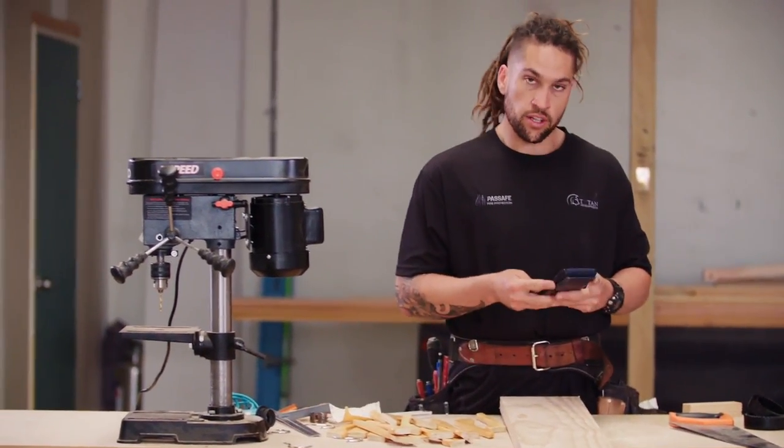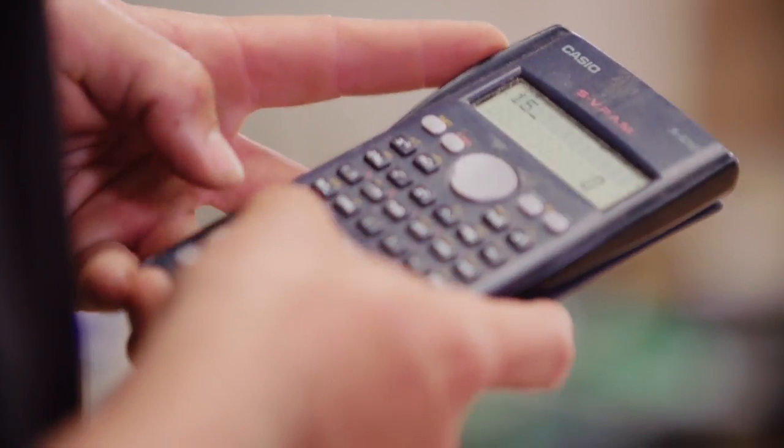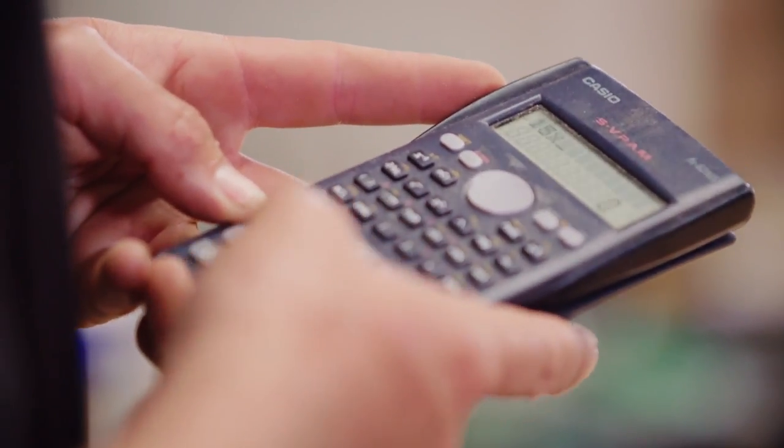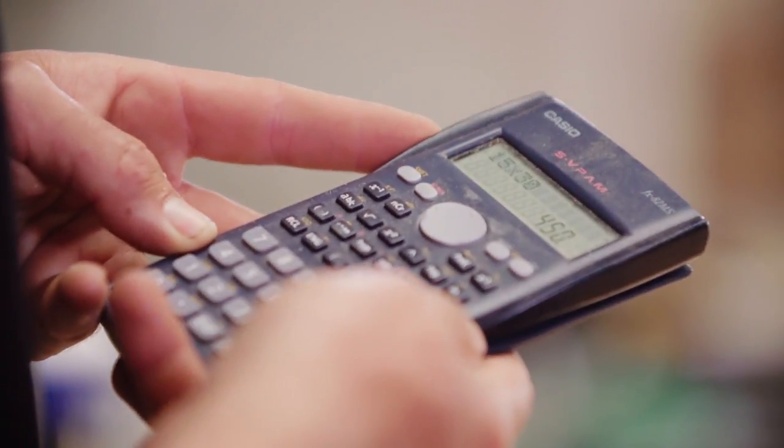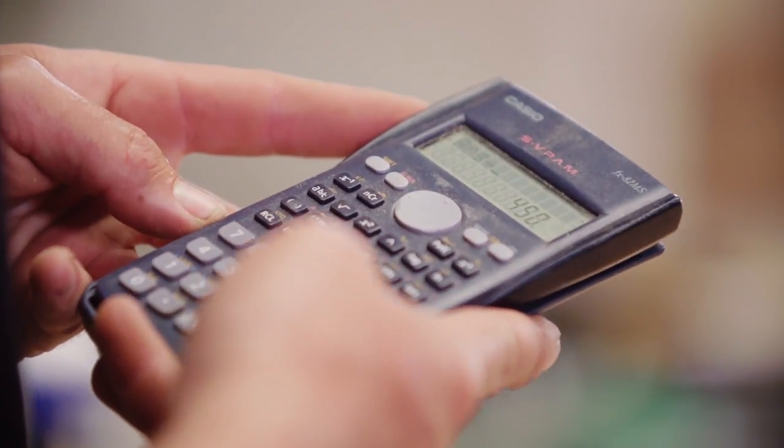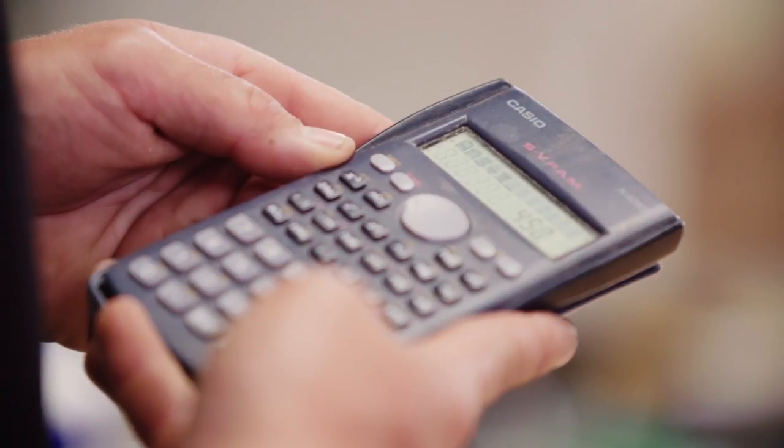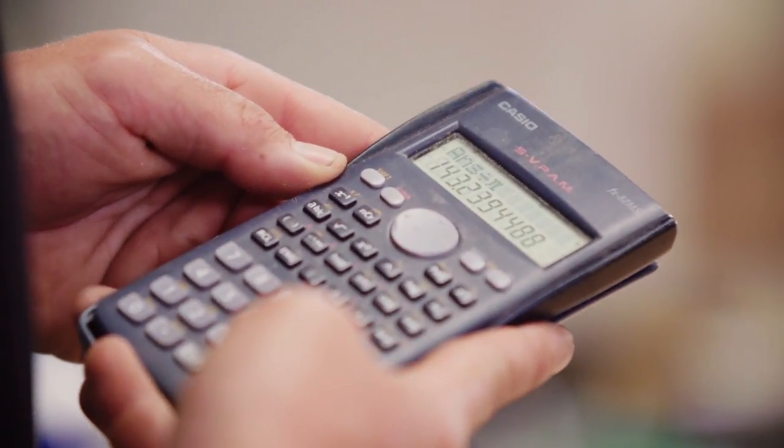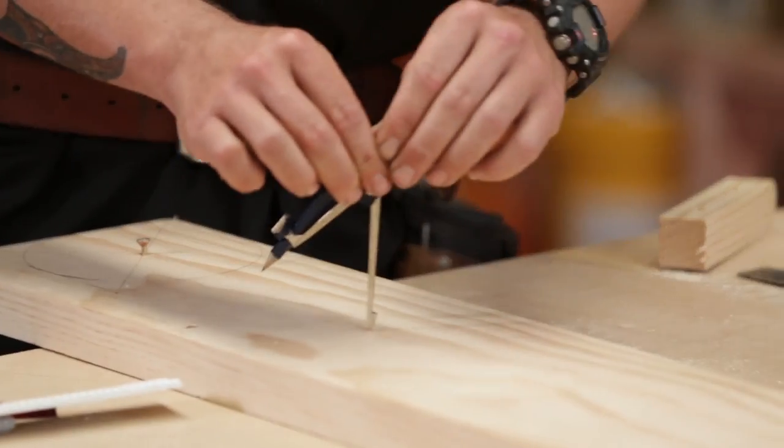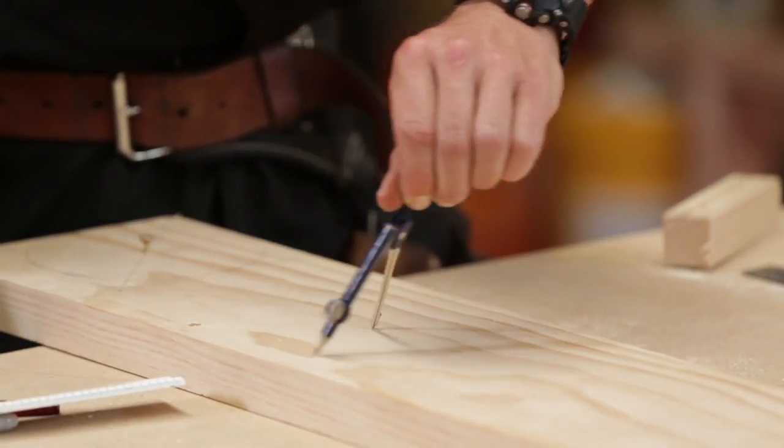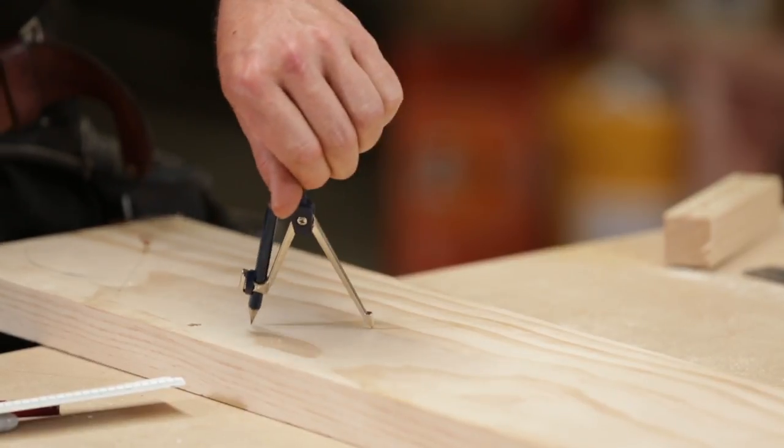So we've got 30 coat hangers. So we go 15 times 30 equals 450mm. Then the next step we have to divide that by pie, not the pie from the bakery. That gives us 143mm. So we'll measure the radius of our circle on our compass. There you go.